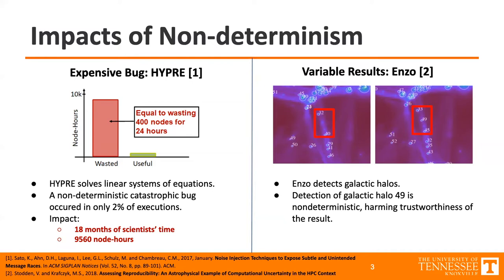And then, let's say the software doesn't crash — you could have variation in results, such as on the right, in ENZO. ENZO is a software that detects galactic halos to look at the creation and formation of galaxies. In this particular case, the detection of galactic halo number 49, not present on the left but present on the right, is non-deterministic. This harms the trustworthiness of the result because if there can be a fading in and out of detection, who's to say that any of the results are correct?